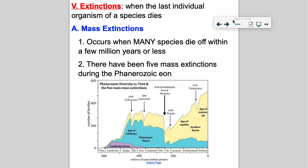Just in the Phanerozoic eon, the one that we're in right now, there have been five mass extinctions. If you take a look at this graph, these different colored bars represent life on planet Earth. You can see where it drops off at the end of the Ordovician period, the Devonian period — mass extinction number one. Number two is a huge drop off into the Permian. There's one with the Jurassic — that's four — and then the end of the Cretaceous is five.